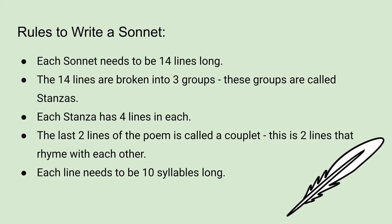You may have noticed some of the things we need to include already, but let me go through the rules we need to follow when writing a sonnet. Each sonnet needs to be fourteen lines long. The fourteen lines are broken into three groups called stanzas, and each stanza has four lines. The last two lines of the poem are called a couplet — two lines that rhyme with each other. Each line needs to be ten syllables long.